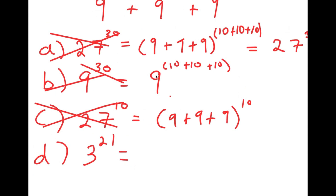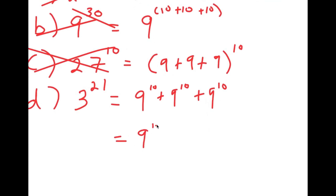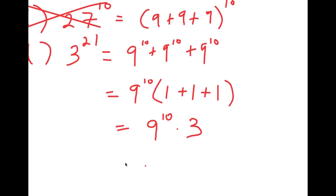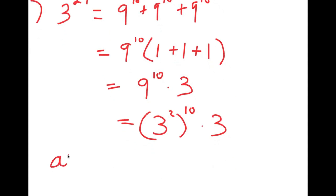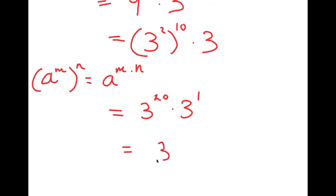Option D, 3 to the power of 21, is the correct answer by process of elimination — let's see how. Starting with 9 to the power of 10 plus 9 to the power of 10 plus 9 to the power of 10, I factor out 9 to the power of 10, giving 9 to the power of 10 times (1 plus 1 plus 1), which equals 9 to the power of 10 times 3. Rewriting 9 as 3 squared: 3 squared to the power of 10 equals 3 to the power of 20. Multiplied by 3 to the power of 1, I simply add the exponents to get 3 to the power of 21.